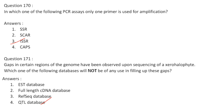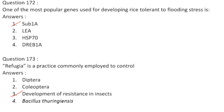Gaps in certain regions of the genome observed upon sequencing of a zero halophyte — the QTL database will not be of any use in filling up these gaps. Answer is option 4. One of the most popular genes used for developing rice tolerant to flooding stress is SUB1A. The SUB1 locus contains three genes: SUB1A, SUB1B, and SUB1C. SUB1A encodes an ERF transcription factor conferring tolerance to flooding. Answer is option 1.